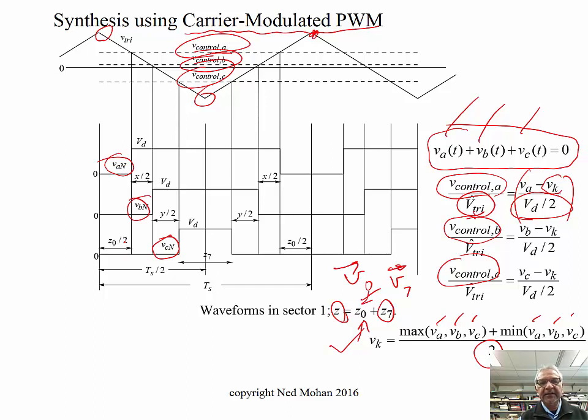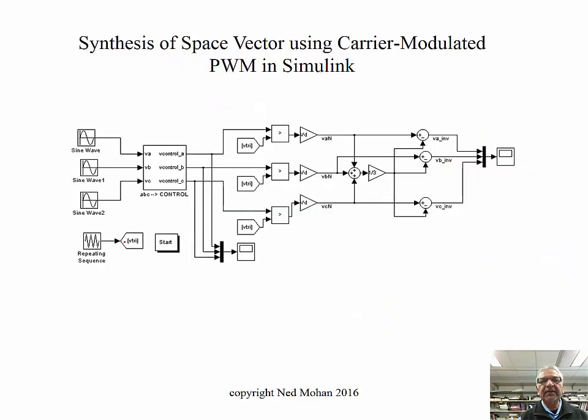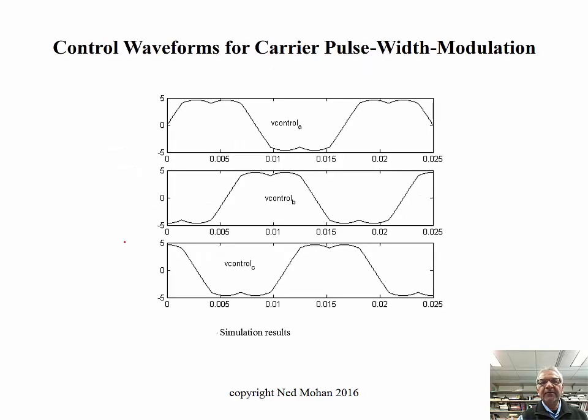So what we have done is we have taken these two, it automatically happens that these two zero states are on the two far sides of the active vectors, so to speak. And so this is what is done in Simulink here, this system is modeled, and we see that the control voltages, instead of looking sinusoidal, which was the case in sine PWM, look of this waveform over here. So that pretty much comes.